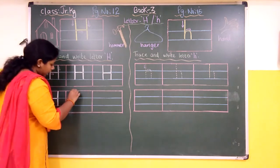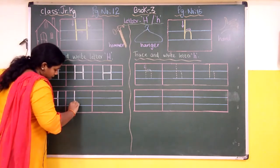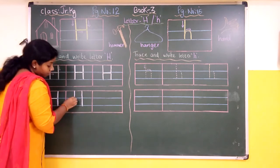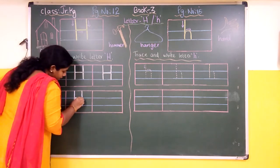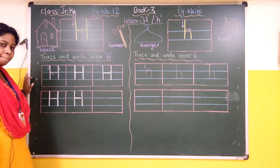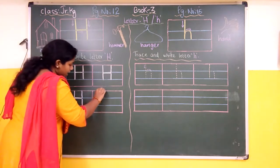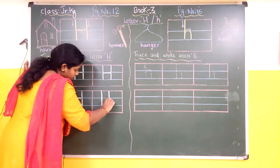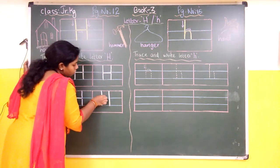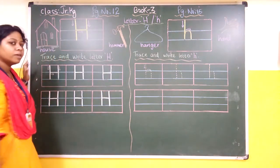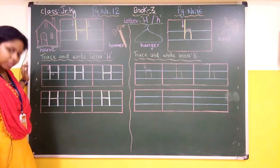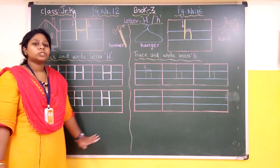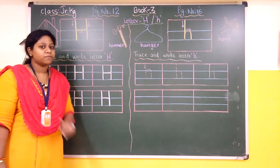Once again — red line to the blue line, again red line to the blue line, to the third blue line, then a small sleeping line. Once again from the red line to the red line, again from the red line to the third line, a small sleeping line — we get capital letter H. So the remaining writing part also you will complete it by yourself, neatly.